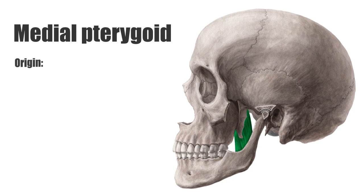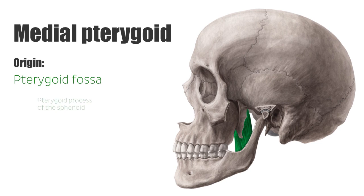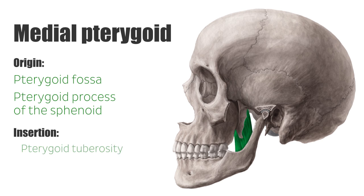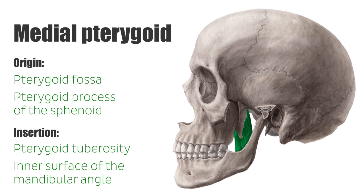This muscle originates from the pterygoid fossa and pterygoid process of the sphenoid. Distally, it inserts on the pterygoid tuberosity on the inner surface of the mandibular angle. It is divided into superficial and deep parts.